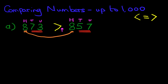So now we can rewrite this question and say 873 is greater than 857. That was nice and easy.